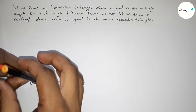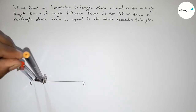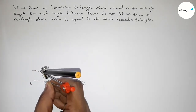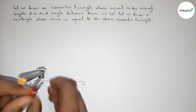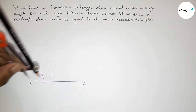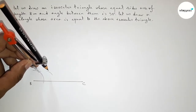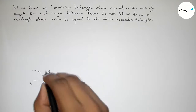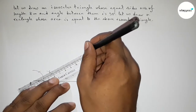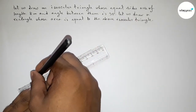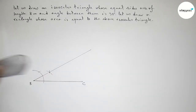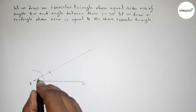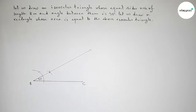Putting the compass and taking any length, drawing an arc this way, then putting the compass here and cutting here, and drawing an arc again with the same length. Cutting here so both curves intersect at a point. Now joining this line to get a 30 degree angle. Checking this by using a protractor — this is 30 degrees.